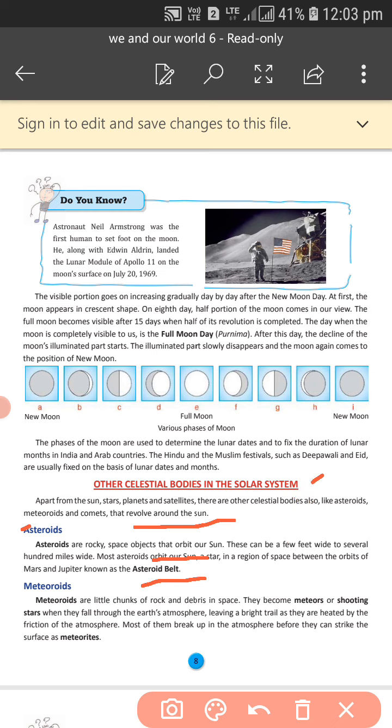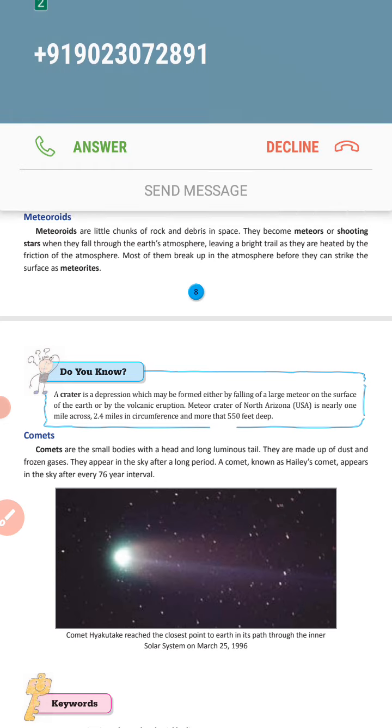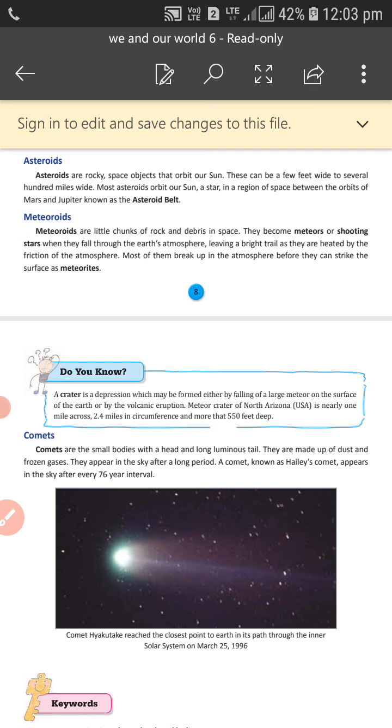A crater is a depression which may be formed either by falling of a large matter on the surface of the earth or by volcanic eruption. Crater of North Arizona USA is nearly one mile across, 2.4 miles in circumference and more than 550 feet deep. A crater is when a hole forms in a surface.